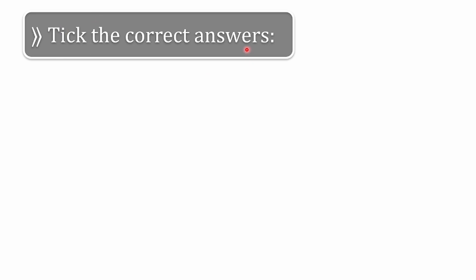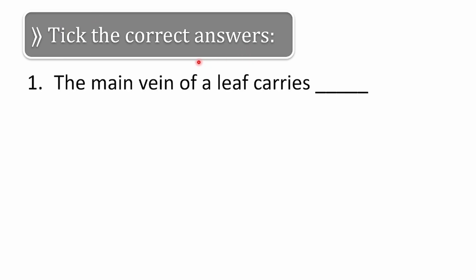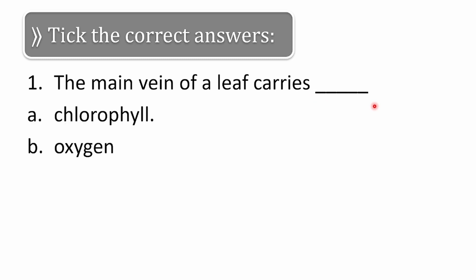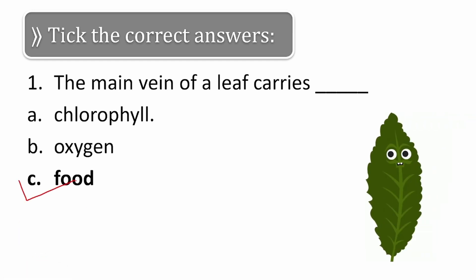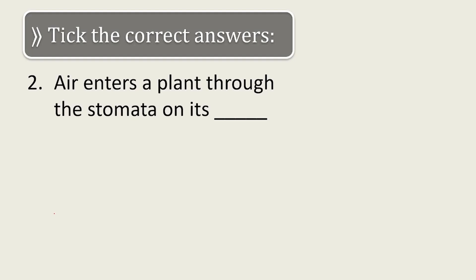First question: tick the correct answer. The first one is — the main vein of a leaf carries. The options are: chlorophyll, oxygen, food. The correct answer is food. So let us tick mark food. The main vein of a leaf carries food.